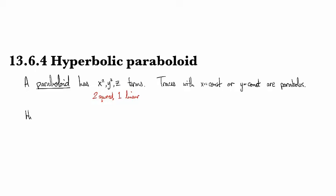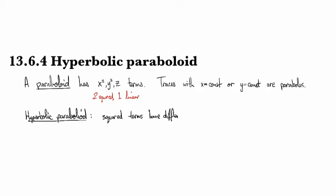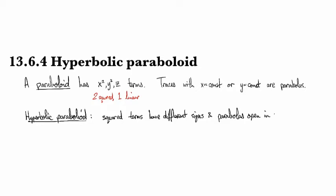So the definition of a hyperbolic paraboloid with the characterizing feature is that the squared terms have different signs, and in terms of the geometry that means that the parabolas open in opposite directions.